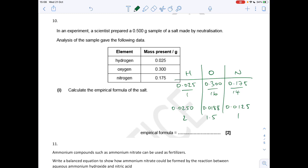Question 10, you can see I've already done all the working out. So we get a ratio of 2 to 1.5 to 1. So we've got to multiply that out by 2 and we'll get H4O3N2.